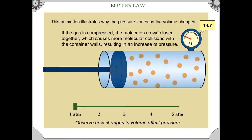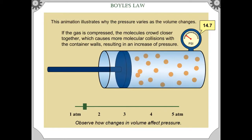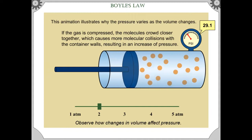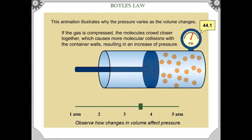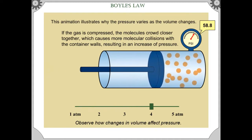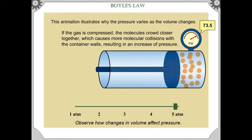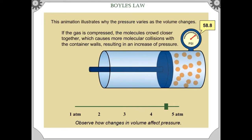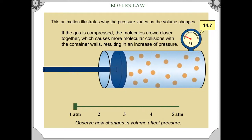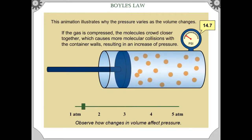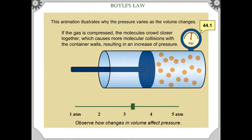This animation illustrates why the pressure varies as the volume changes. If the gas is compressed, the molecules crowd closer together, which causes more molecular collisions with the container walls, resulting in an increase of pressure. Observe how changes in volume affect pressure.